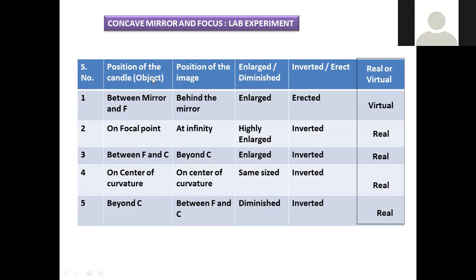Next, when the candle is placed exactly at the focal point F, the position of the image will be at infinity — you cannot find the exact distance, as it is projected at infinite distance. In this condition, an enlarged image is observed — highly large in nature. The image is again inverted, and the image formed at this focal point will be a real image.